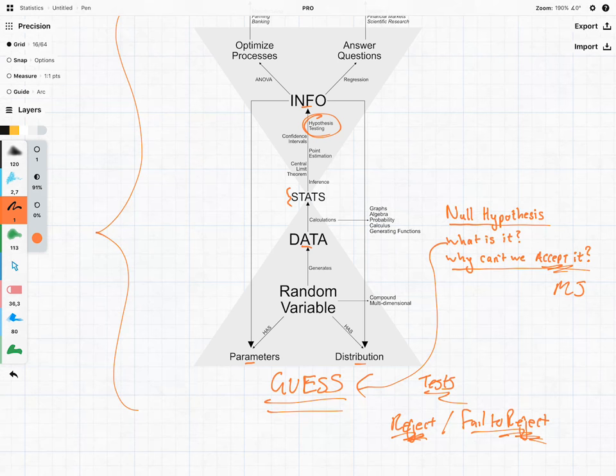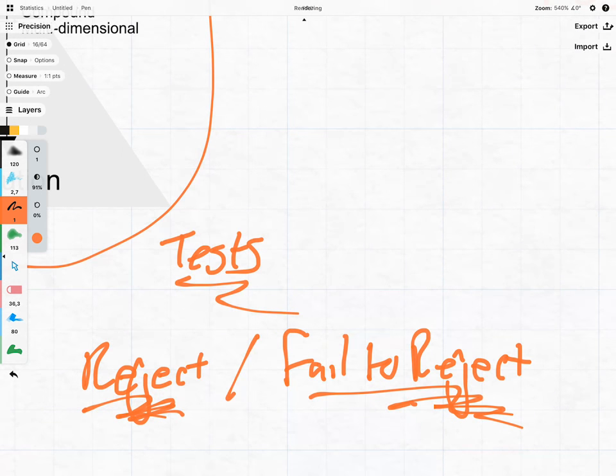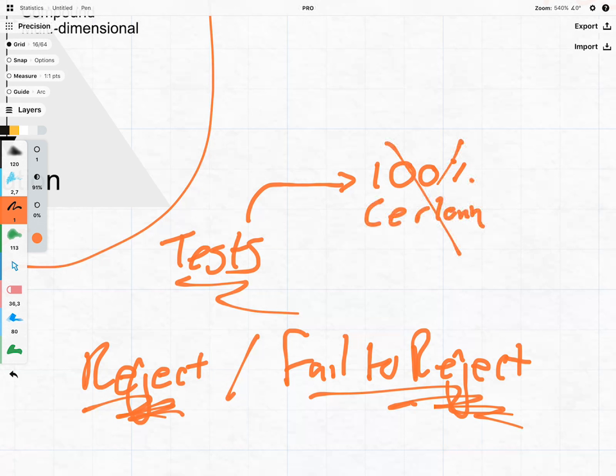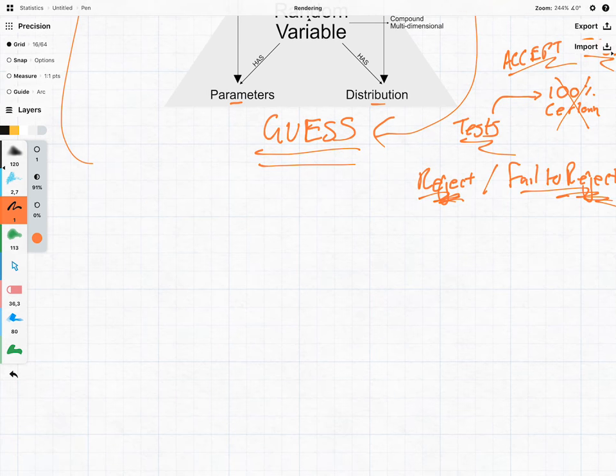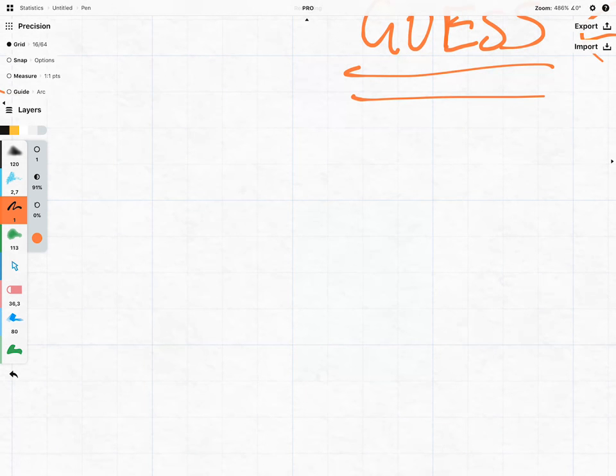And this is because we're not 100% certain and this is where stats does become a little bit philosophical. Because if we had to start using the word accept it means that what we're accepting is therefore the truth. So let's maybe take a step back from philosophy and just look at a very quick example.